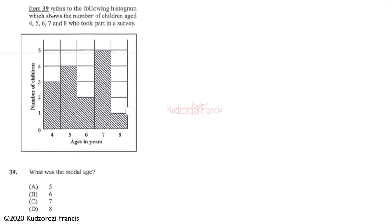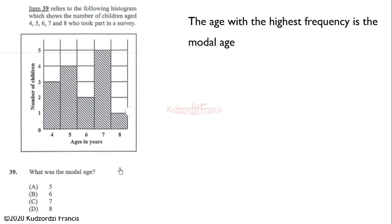Now let's look at question 39. Item 39 refers to a histogram showing the number of children aged 4, 5, 6, 7, and 8 who took part in a survey. The question asks for the modal age, which is the age with the highest frequency — that is, the tallest bar. From the histogram, the bar with the greatest height corresponds to an age of 7. Therefore the modal age is 7.